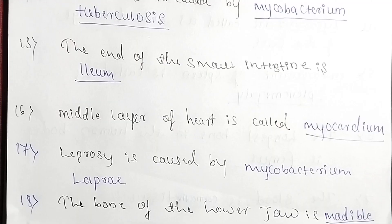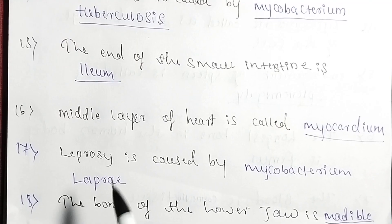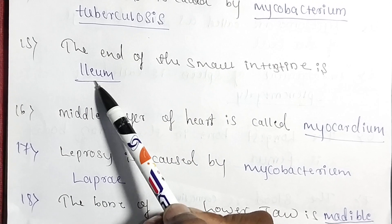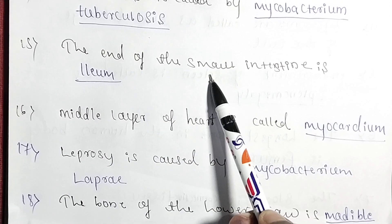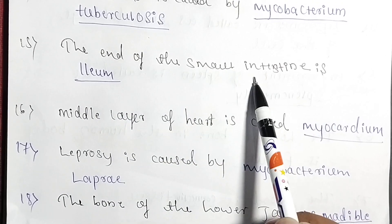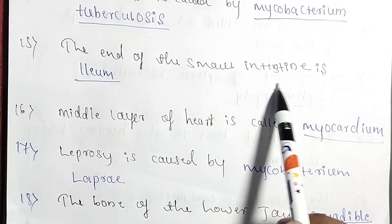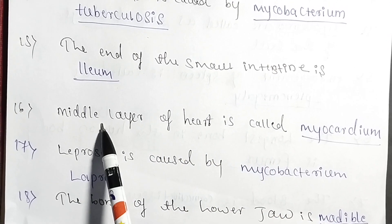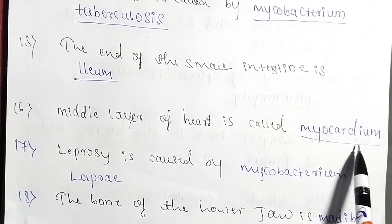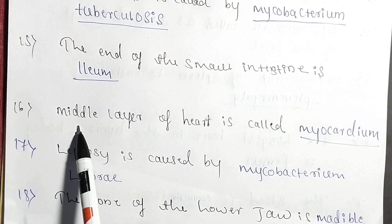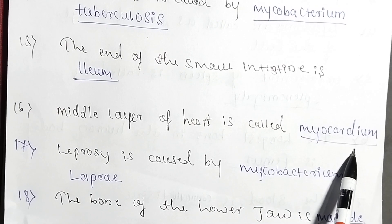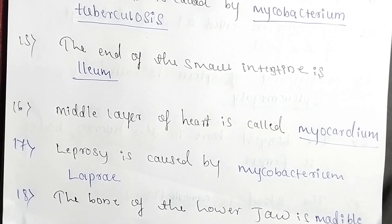The end part of the small intestine is called the ileum. Next question: the middle layer of the heart is called the myocardium. In the heart there are three layers, and the middle layer is the myocardium.